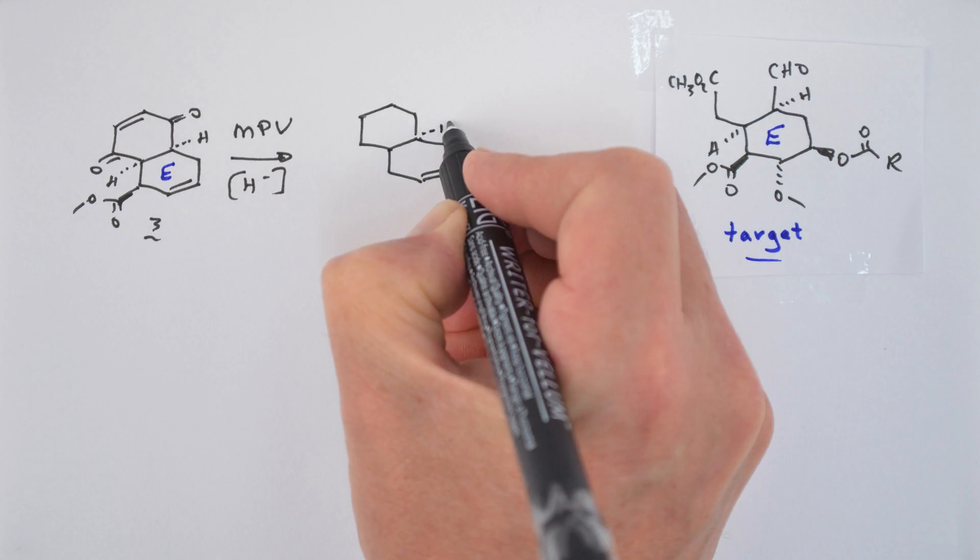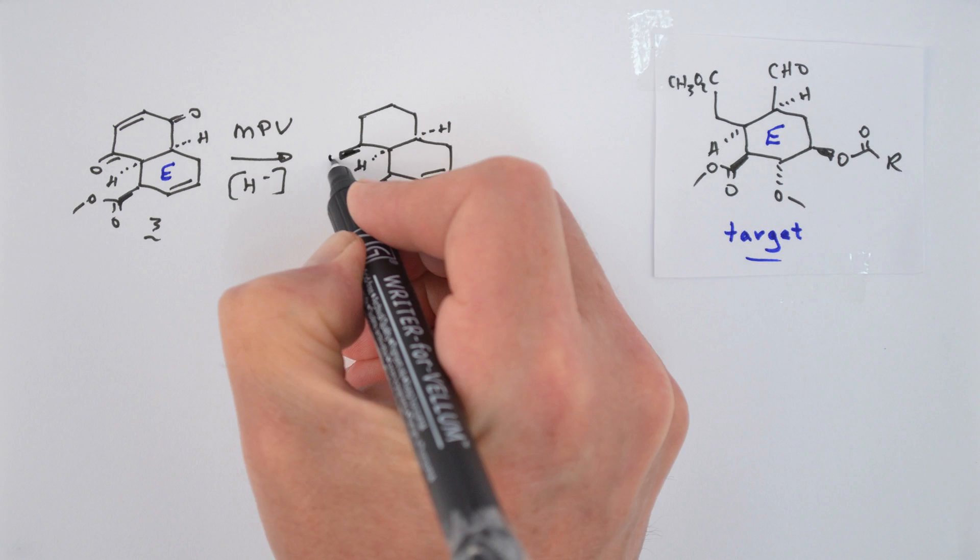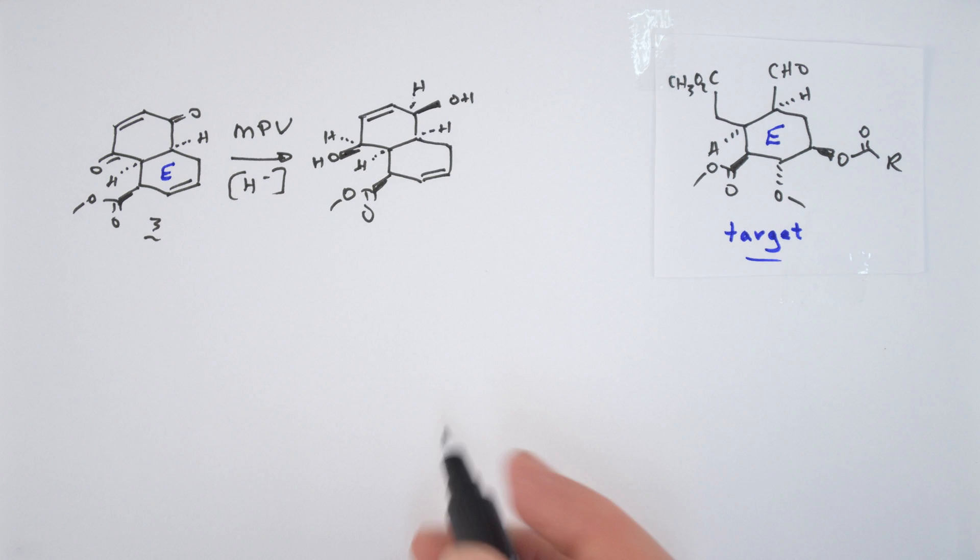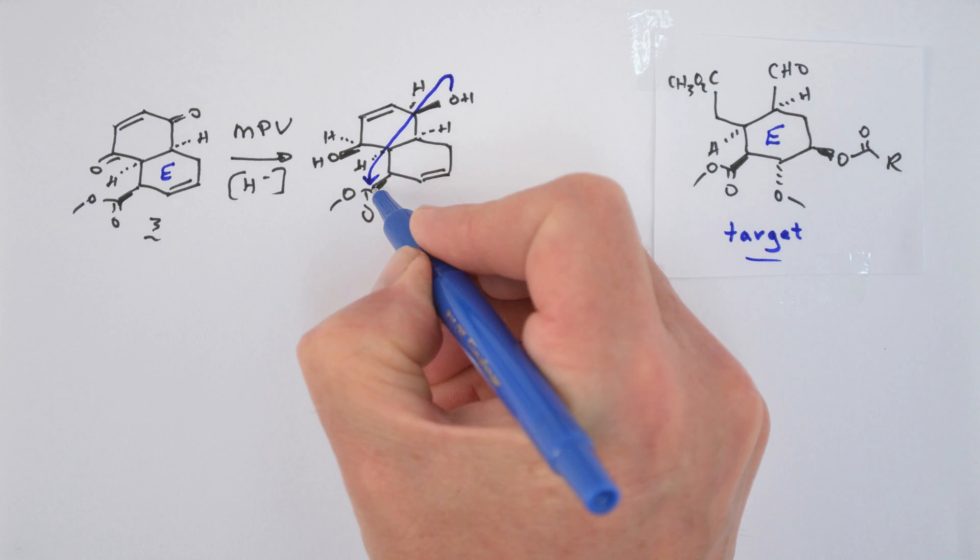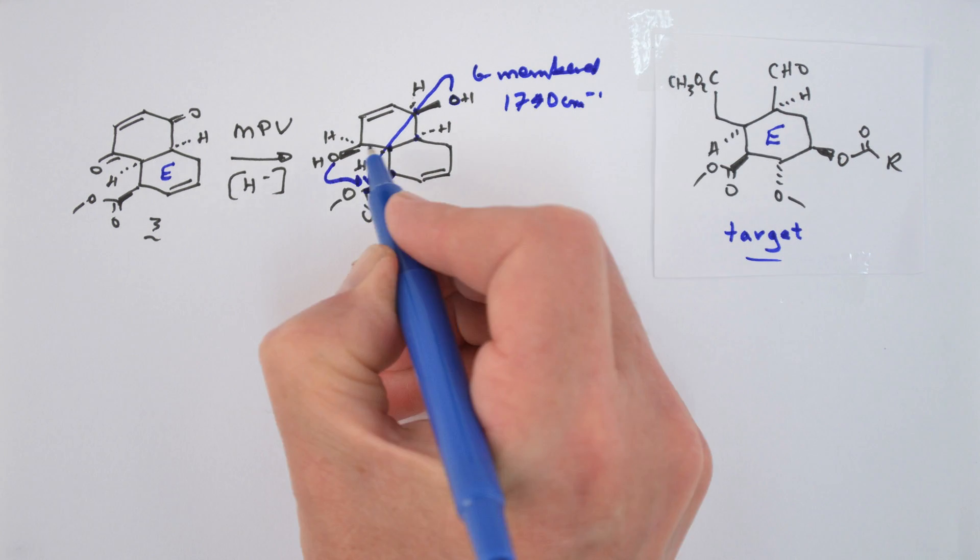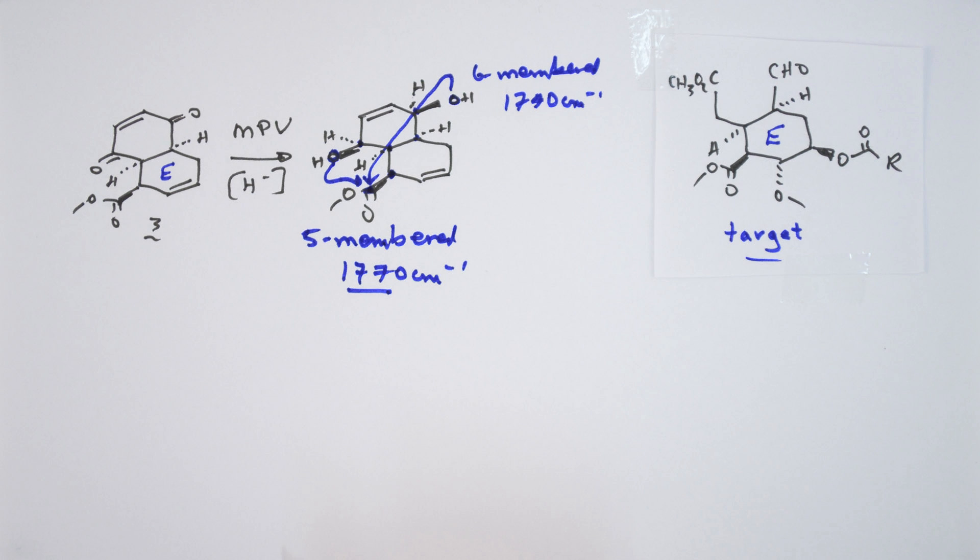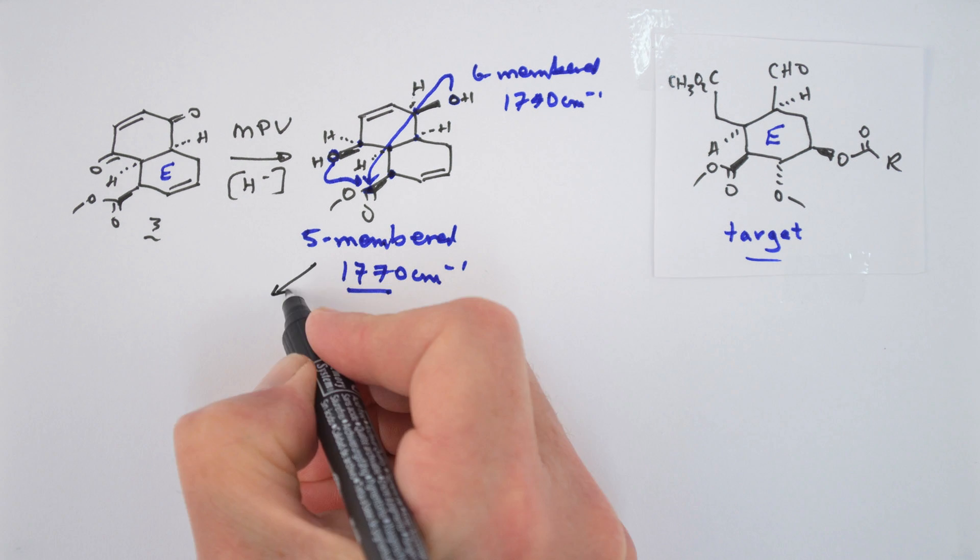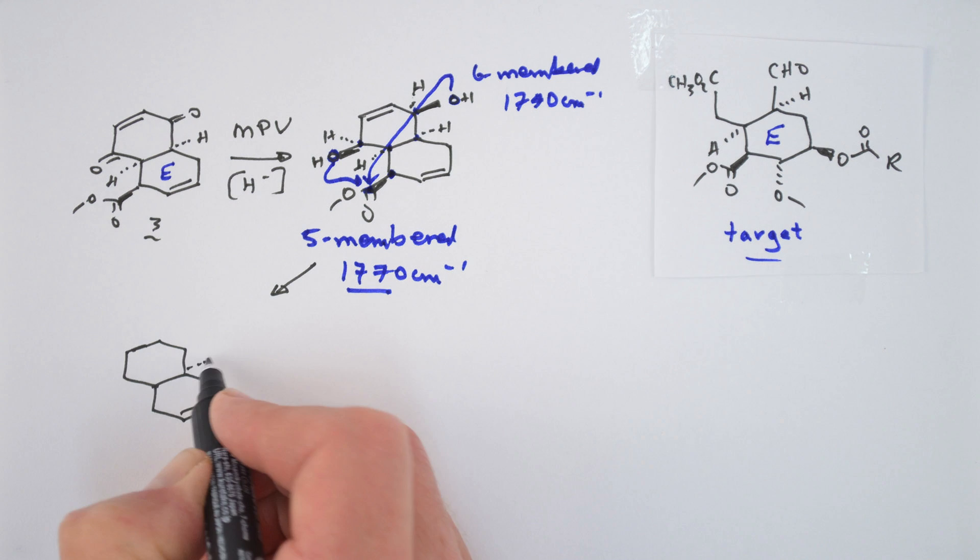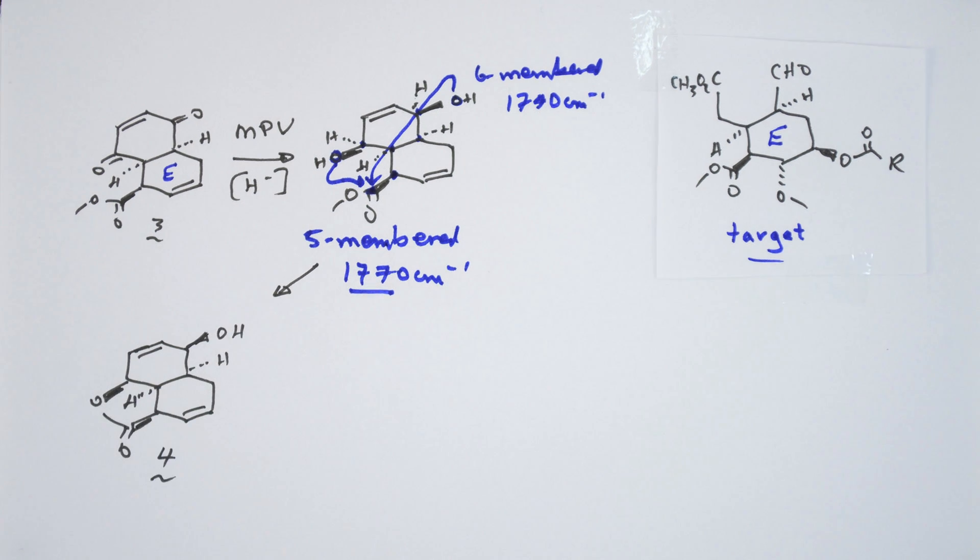He reduced the two carbonyls of the quinone using Meerwein-Ponndorf-Verley conditions, aluminum tetraisopropoxide, which reduced both carbonyls from the convex face. In principle, two possible lactones could have formed, a six-membered lactone or a five-membered lactone. This chemistry was done before the days of NMR spectroscopy, but Woodward knew which lactone formed, because the carbonyl stretch in the IR for a six-membered lactone occurs at 1740 centimeters to the minus one, while the five-membered lactone stretched at 1770 centimeters to the minus one. The spectra showed a stretch at 1770, so compound 4 was the product.